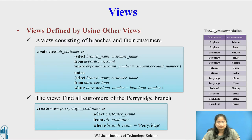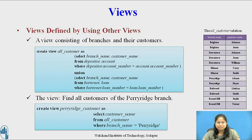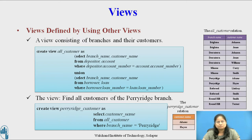Consider the view to find all the customers of the Perirage branch using the view all_customer: CREATE VIEW perirage_customer AS SELECT customer_name FROM all_customer WHERE branch_name = 'Perirage'. The result of this view is the relation perirage_customer with the attribute customer_name of the Perirage branch.